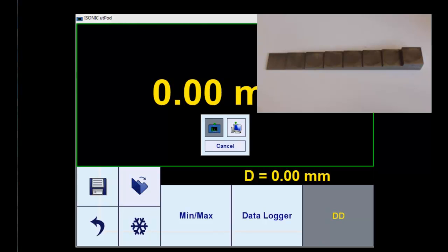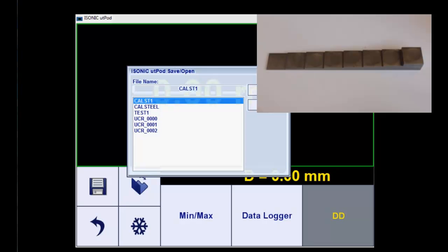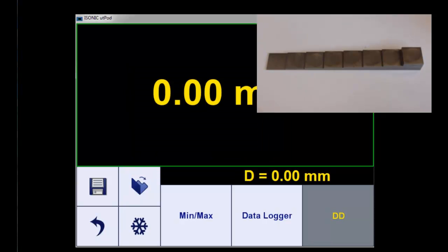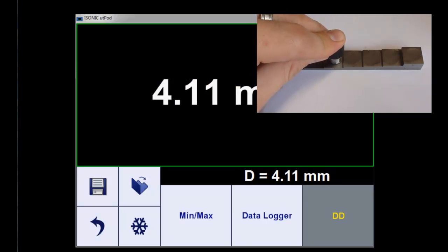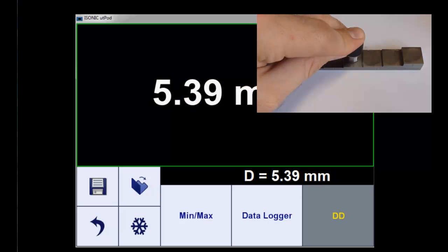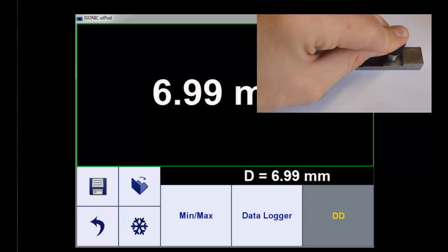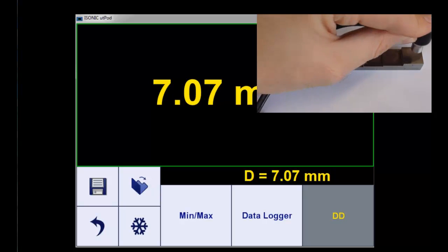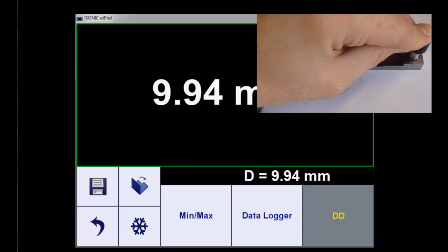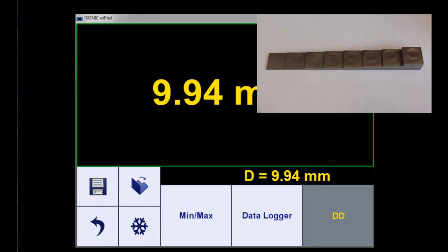Here we can now do the same measurements again. First call the data set and couple the probe to the step block again. Measure on two millimeter, three millimeter, four millimeter, five, six, seven, or ten. So you see now in standard mode, the instrument is calibrated for two to ten millimeter thickness measurement.